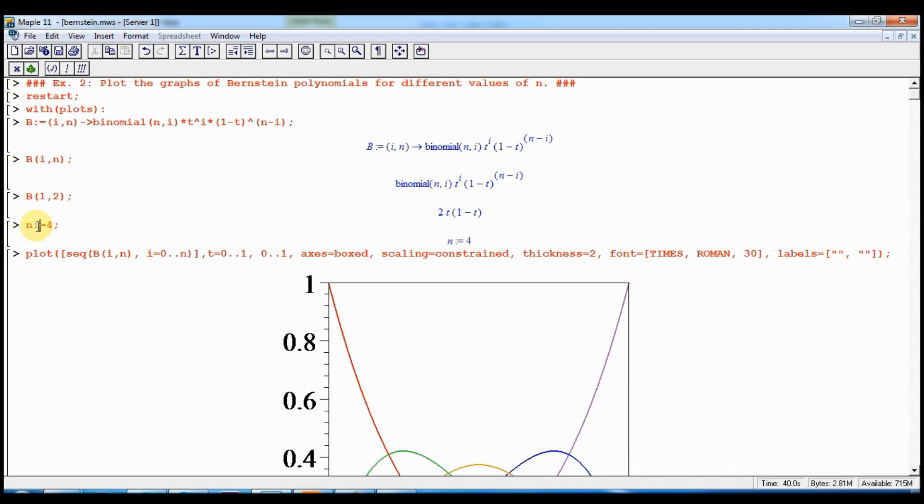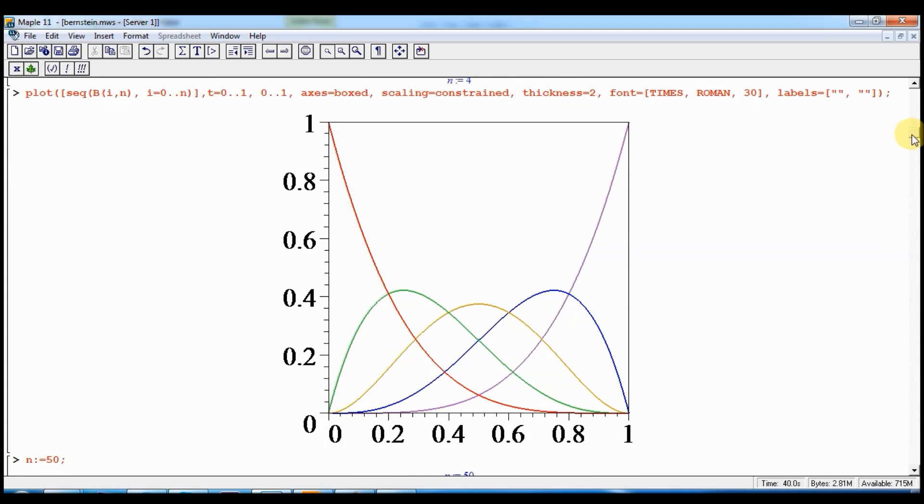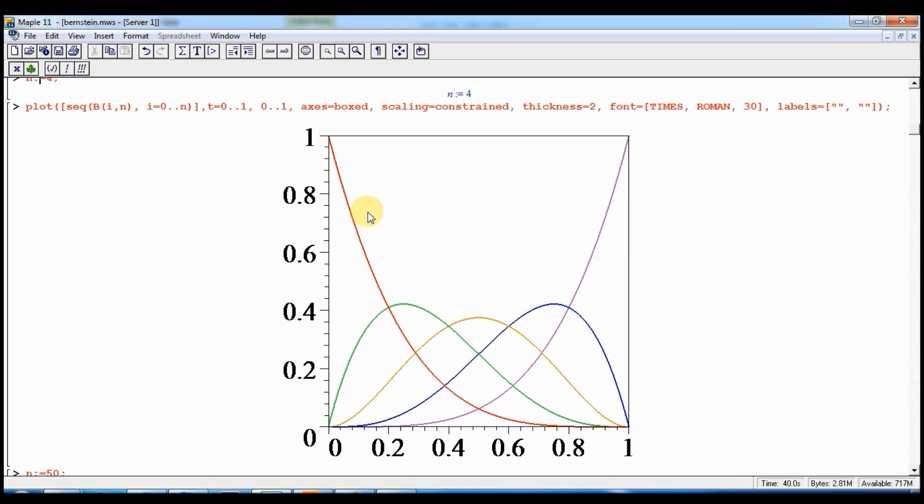Let me select n equal to 4 and plot the graphs of corresponding Bernstein polynomials. As a result, here I have 5 graphs: 1, 2, 3, 4, and 5.